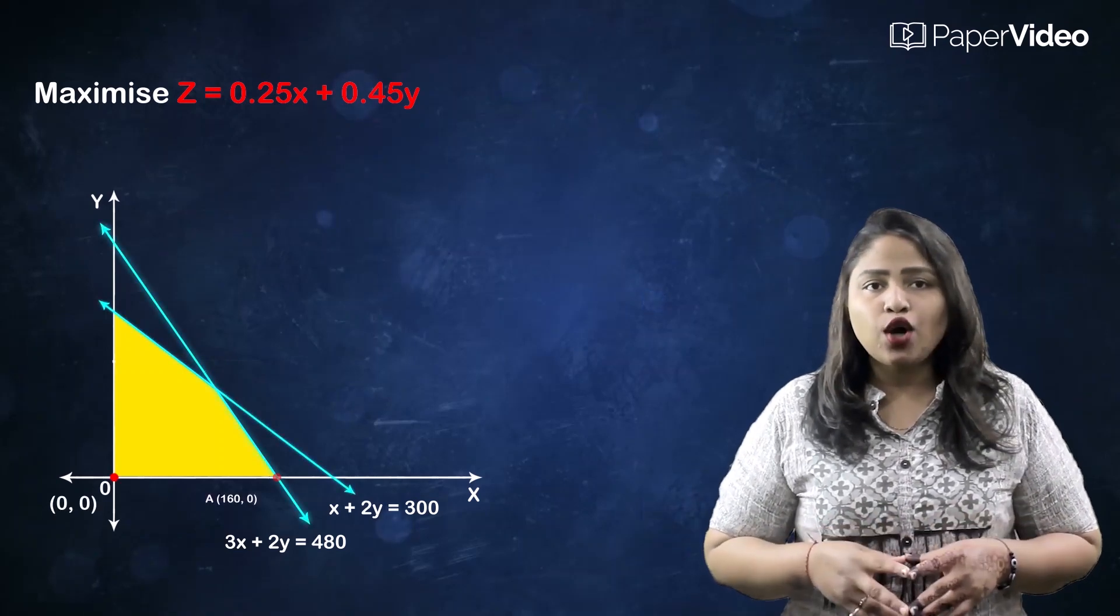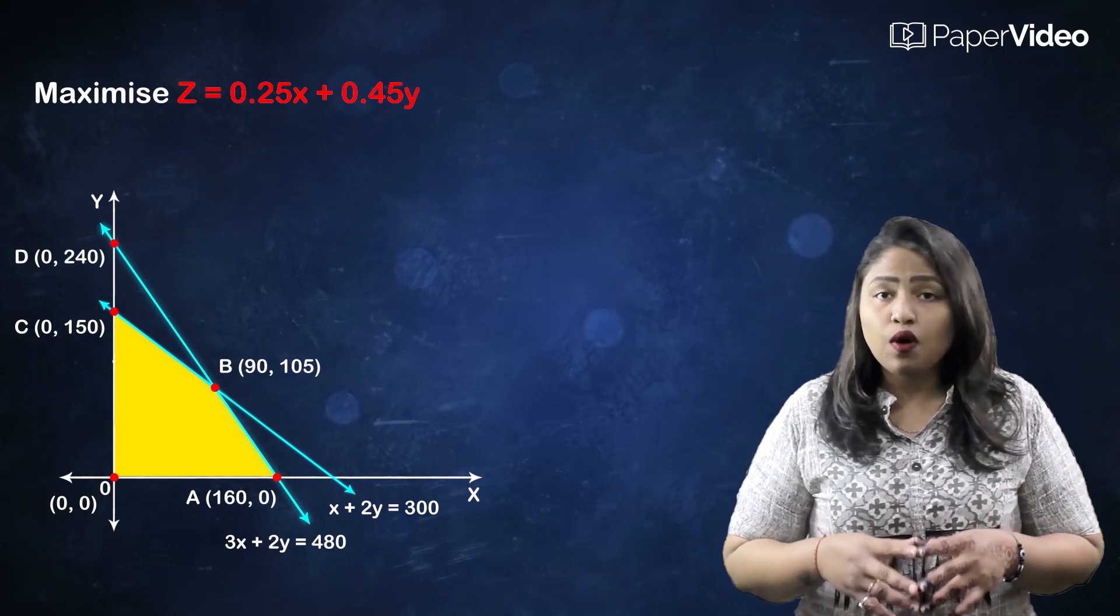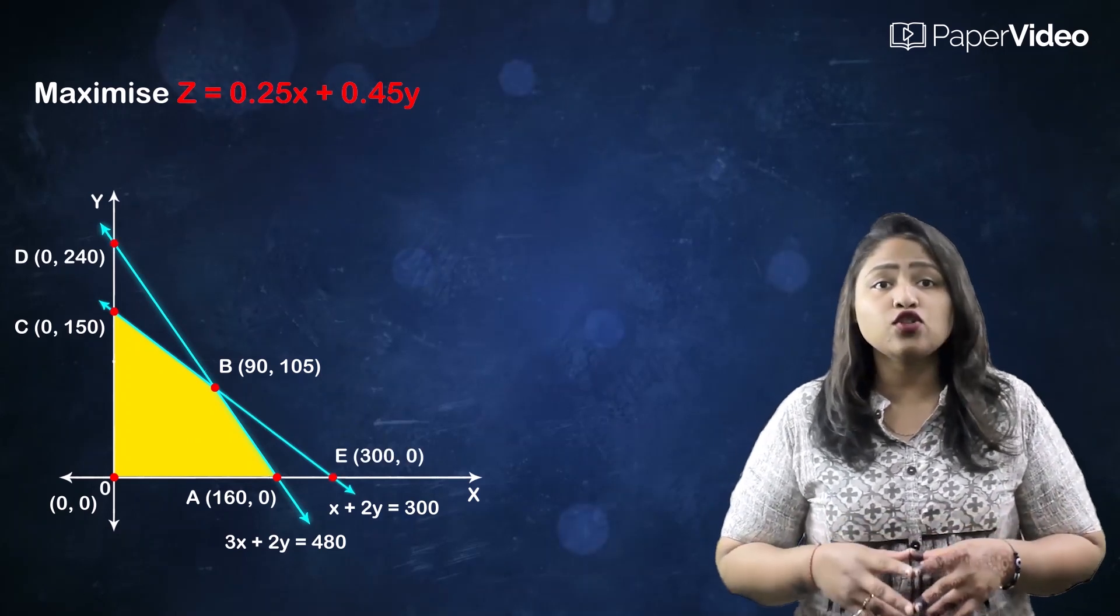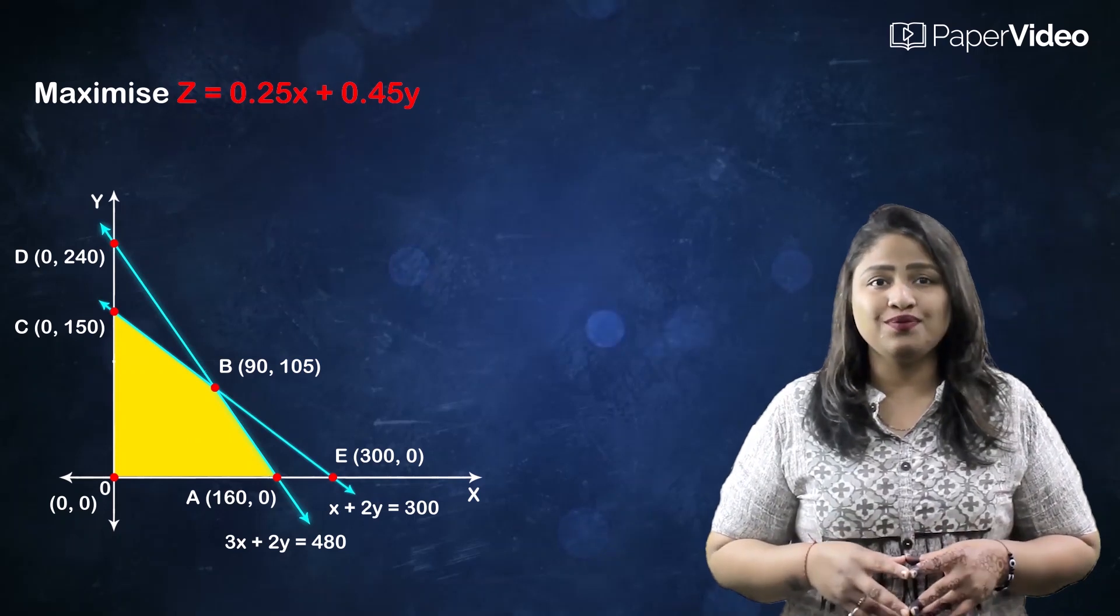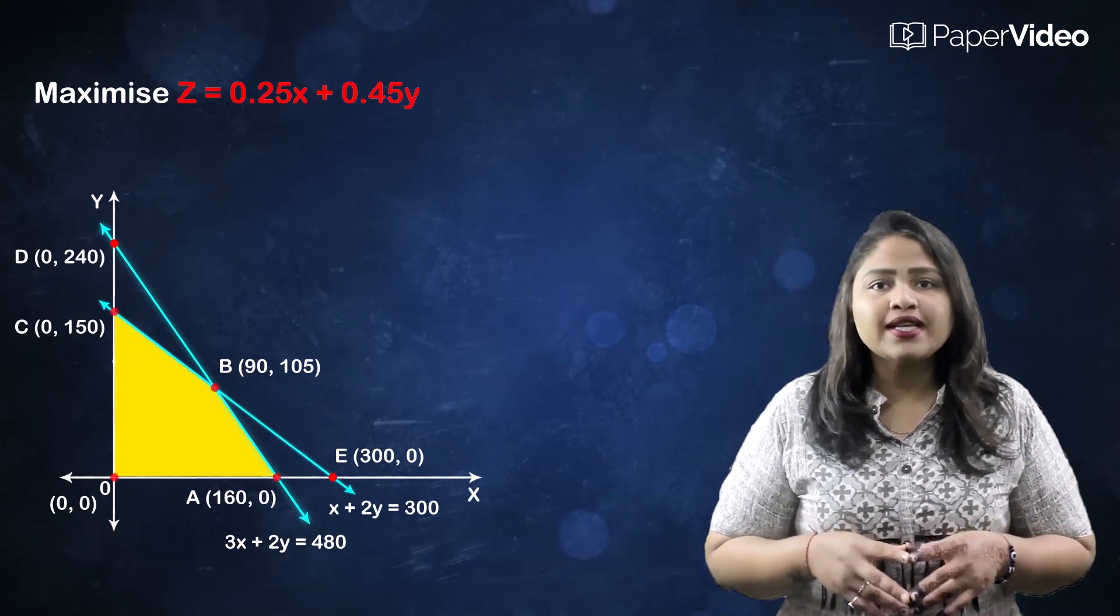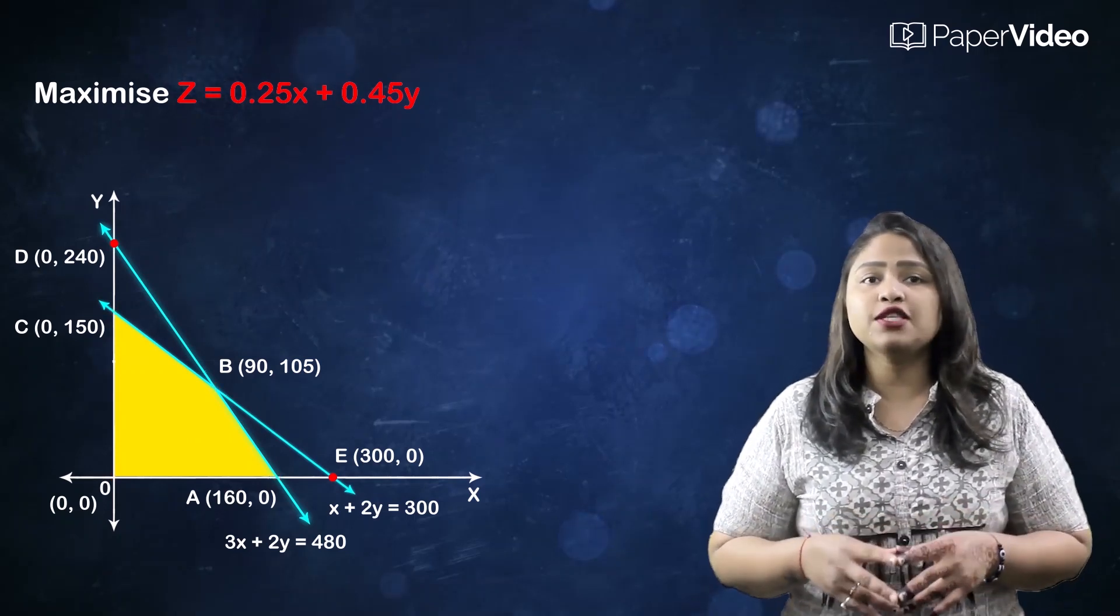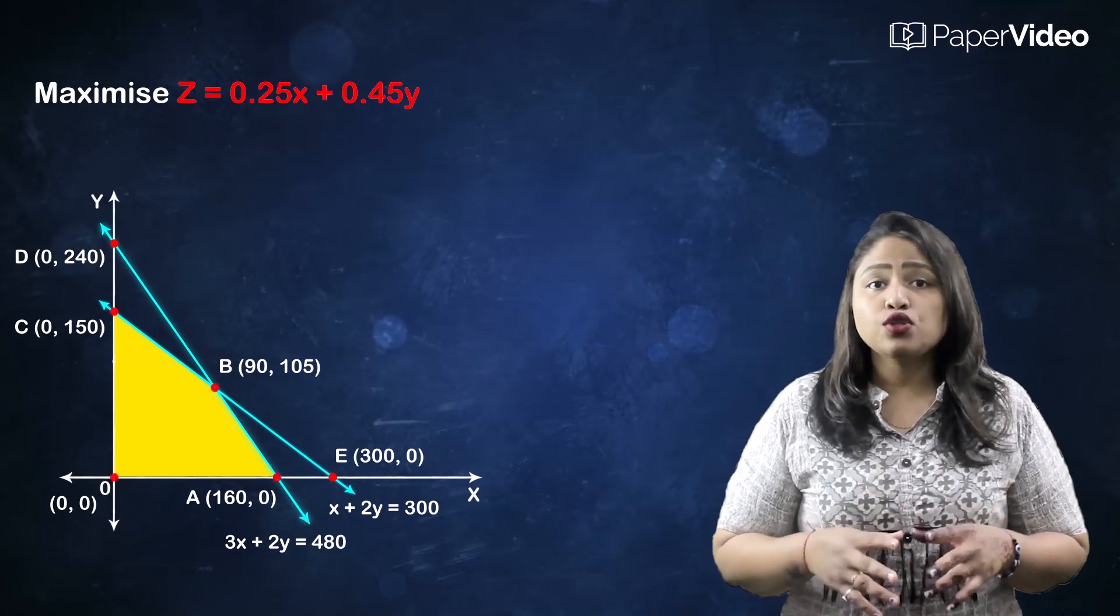Step 3: Locate the corner points either by inspection or by solving the two equations of the lines intersecting at that point on the feasible region. These points always occur at the vertex of the feasible region.